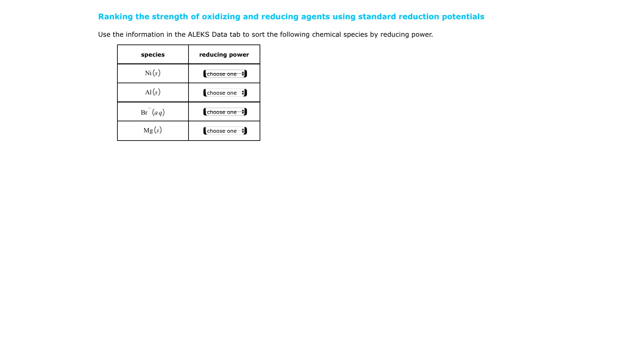Welcome back. This is an Alex training video on ranking the strength of oxidizing and reducing agents using standard reduction potentials. So a standard reduction potential is standard. All of the different elements have been ranked against each other using, I think it's hydrogen. So they do an experiment with hydrogen, they find out what the voltage was, and then each one is written down and you can compare apples to apples and know which one is more capable of reducing something.